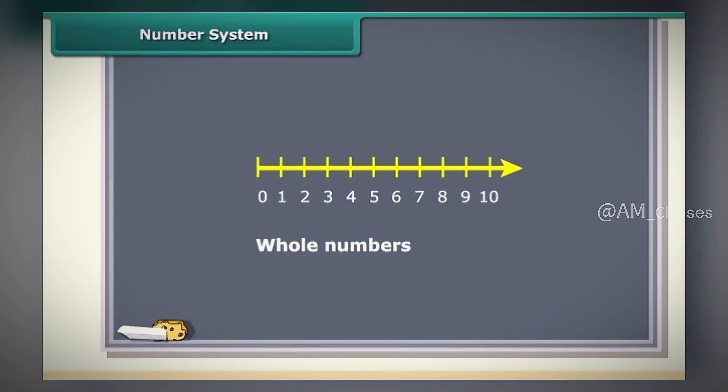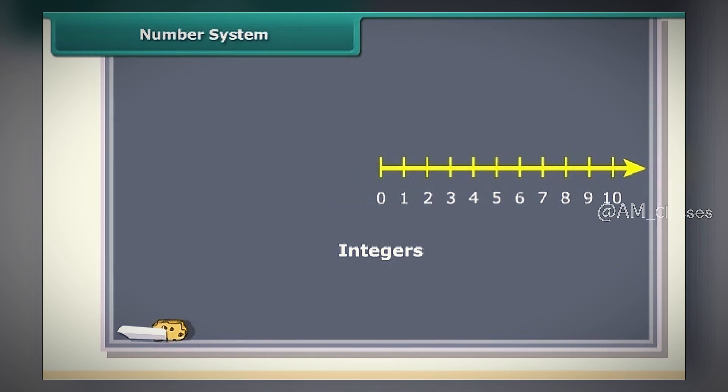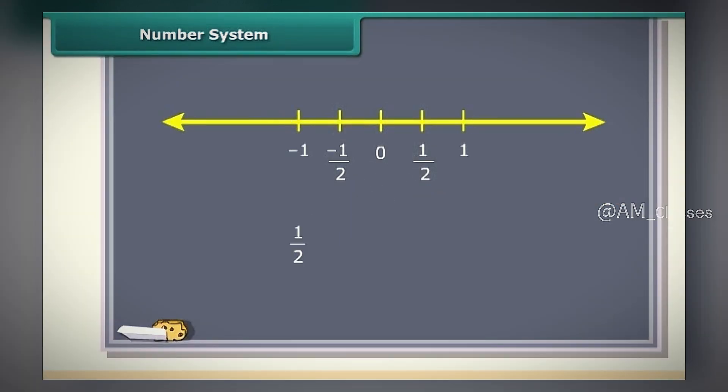Whole numbers are simply the numbers 0, 1, 2, 3, 4, 5 and so on. There are no fractions. Natural numbers are the positive whole numbers except 0. Integers are like whole numbers but they also include negative numbers. So integers can be positive, negative and 0. Students, what about 1 by 2? Is it a whole number, natural number or an integer? You can see 1 by 2 lies between 0 and 1. We call it a rational number. Come along to know more.